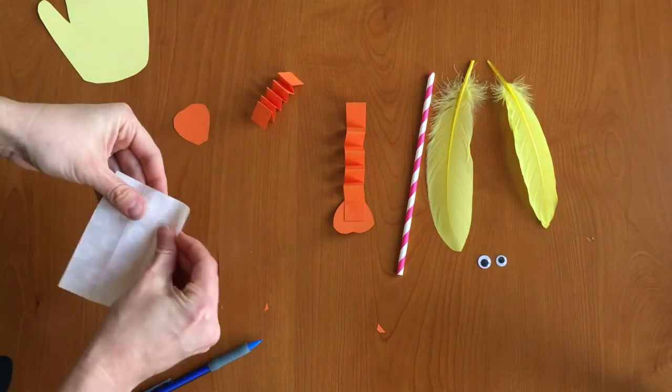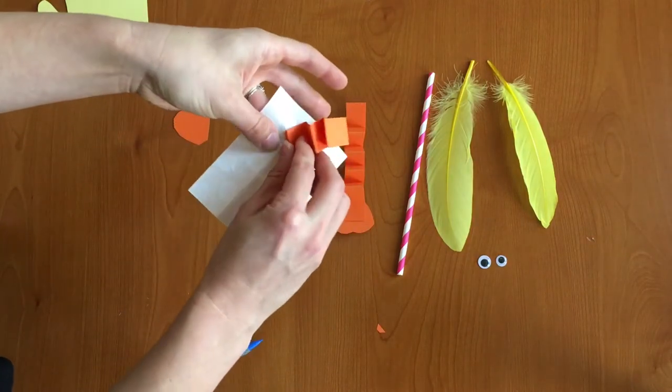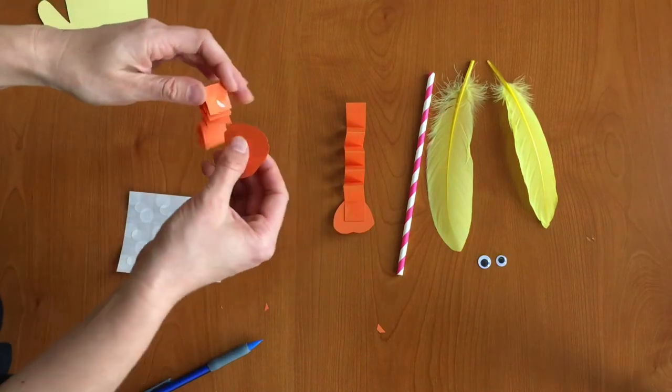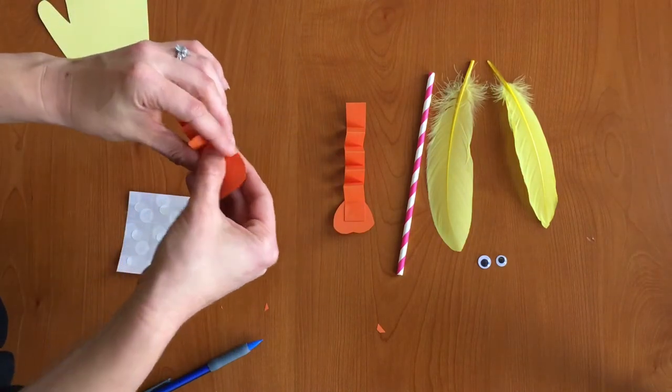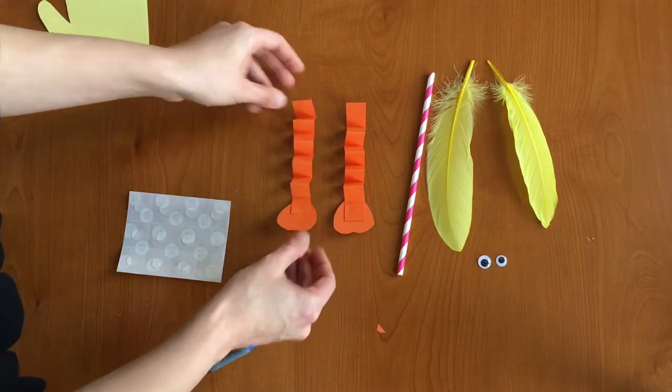And then once more, taking a glue dot. Get the glue dot on there and stick it to the foot. And now we have our two bouncy legs.